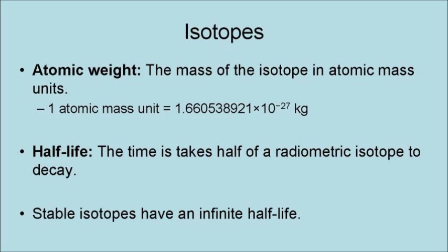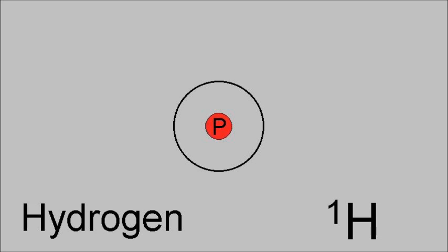Stable isotopes have an infinite half-life. Hydrogen-1 is the most common form of hydrogen, and it makes up 99.985% of all hydrogen atoms in the universe. It has an atomic number of 1 and a particle number of 1, consisting of a single proton and no neutrons. It has an atomic weight of 1.007825, and it is stable.